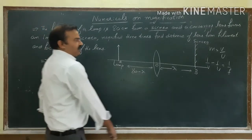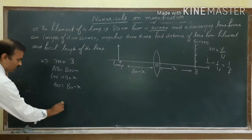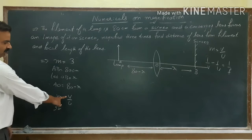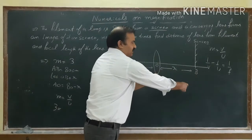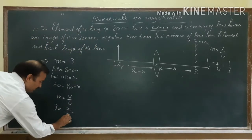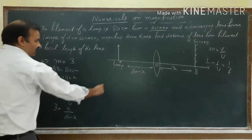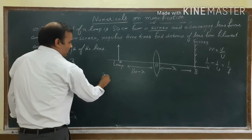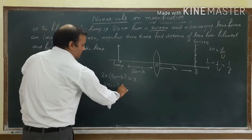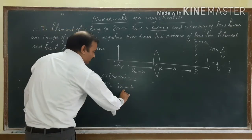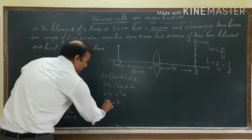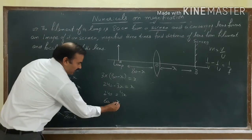We will use the formula for magnification: M is equal to V by U. M is 3, V is the position of the image which is x, and U is 80 minus x. Cross multiply: 3 multiplied by 80 minus x is equal to x, so 240 minus 3x equals x. Shifting 3x to the right hand side gives 4x equals 240, or x is equal to 60.